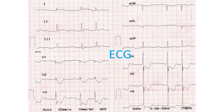Usual tests done in cases of suspected myocarditis are similar to those done for other heart diseases. An ECG, the recording of the electrical activity of the heart, is the test done most often. It will show changes if there is damage to the heart muscle and abnormalities in heart rhythm. A supportive blood test when there is heart muscle damage is cardiac troponin, which is elevated when there is heart muscle damage due to any cause.